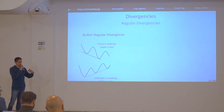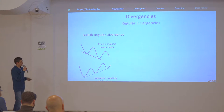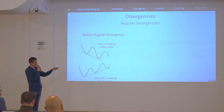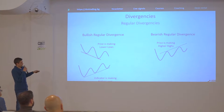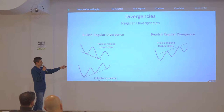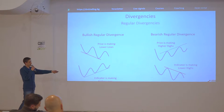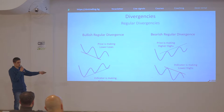Regular divergences tend to predict a potential reversal, while hidden divergences usually predict a potential continuation of the trend. We have a bullish regular divergence and a bearish one. For the bearish one, the price is making higher highs - we are in an uptrend - but at the same time the indicator is showing a decrease, making lower highs. When you spot that, you can expect the uptrend to finish and a new downtrend to begin.